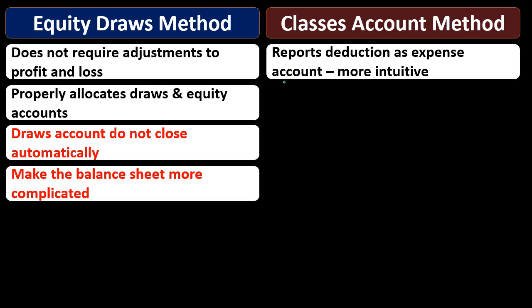The classes method reports deductions as expenses, which is a more intuitive concept. When we're tracking personal items, we're tracking them because they're typically deductible. Most people think of deductions and expenses as similar in nature, and therefore it makes more sense to record these items as a kind of expense rather than recording them as draws. Most people see them as a deduction, like a kind of expense.